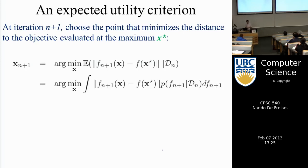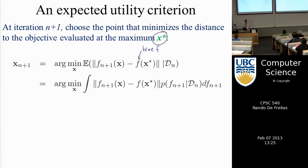Coming back to optimization, and this partly answers an earlier question: let's assume we know the true function. If x-star is the location of the maximum, and we're trying to approximate the true function with a GP, then what we'd want is: for all functions we could sample from the GP, the one that minimizes the difference between that function and the true function at x-star.